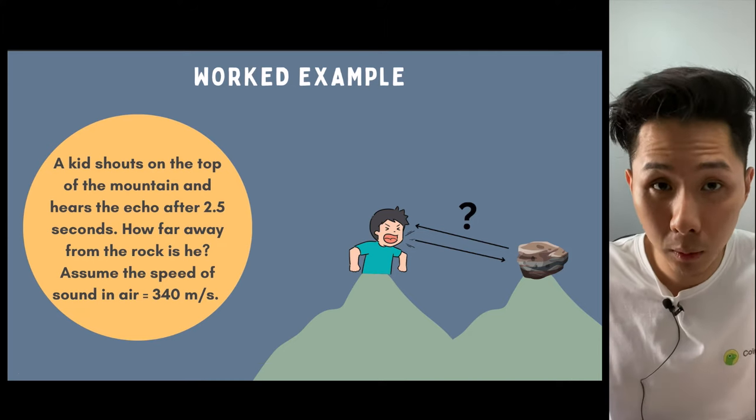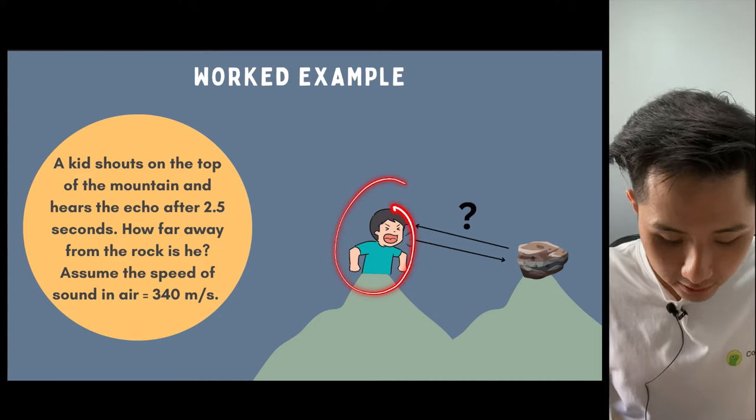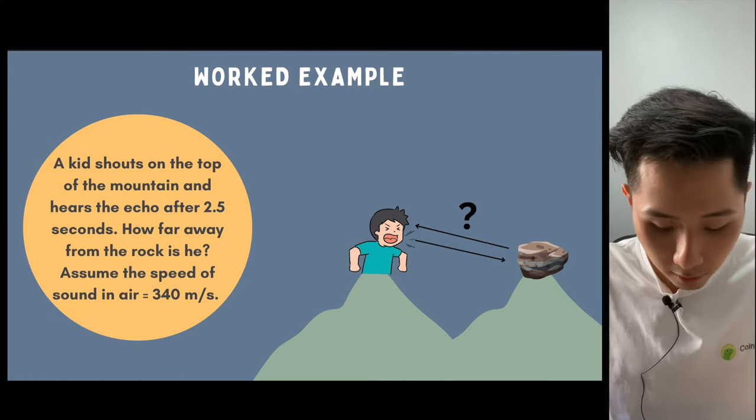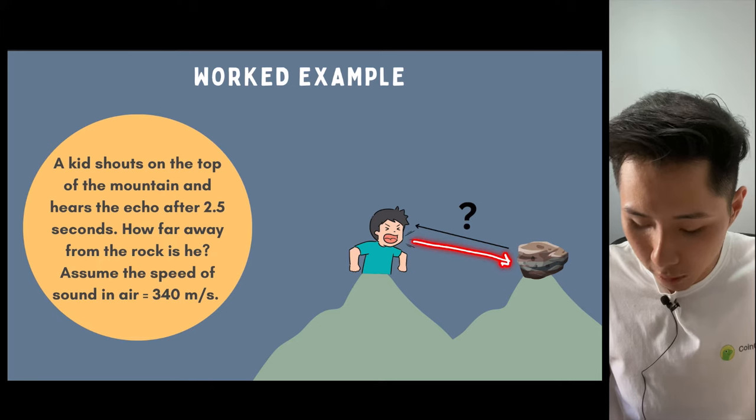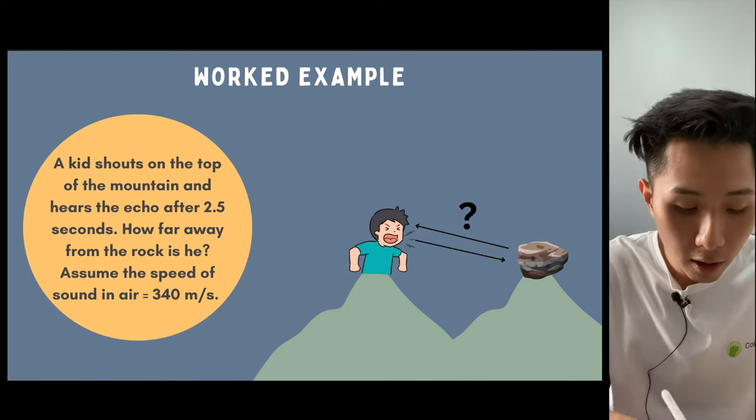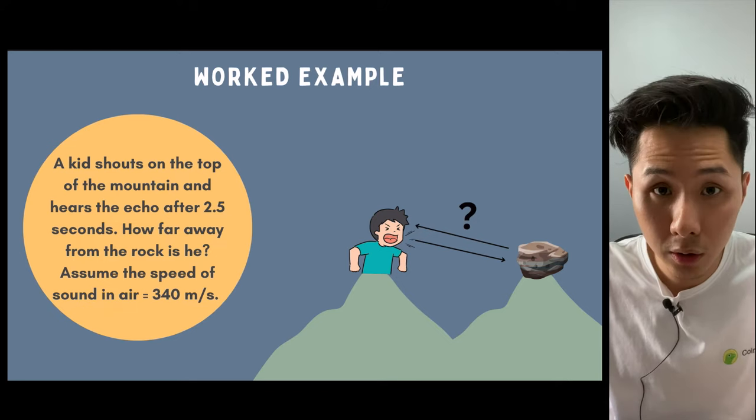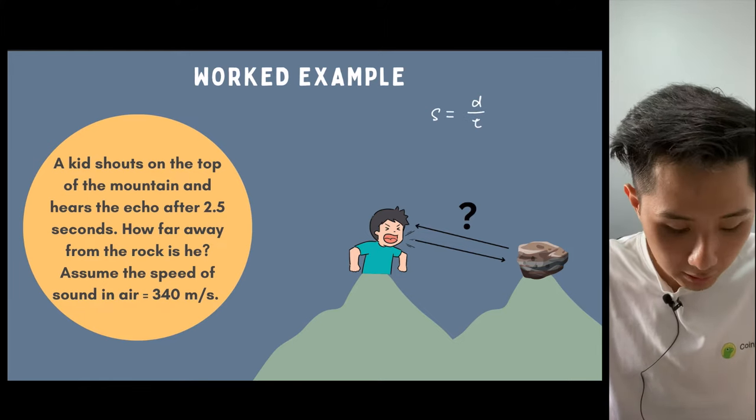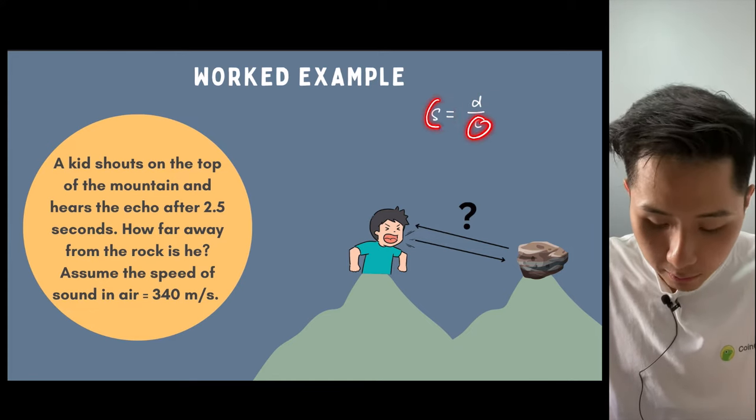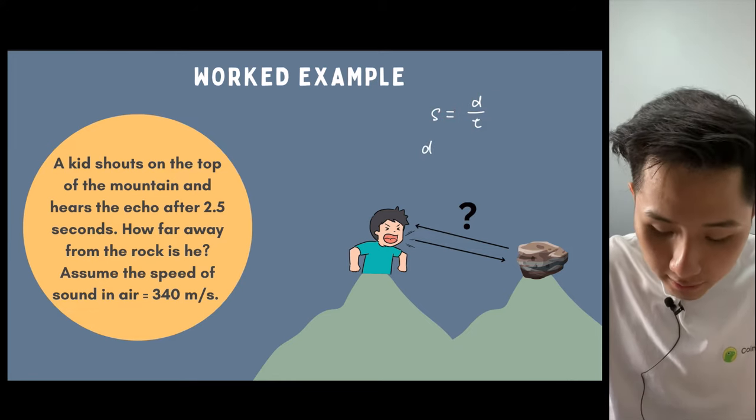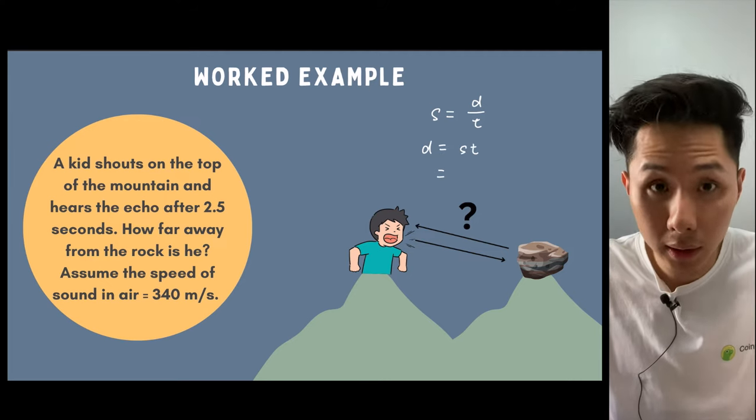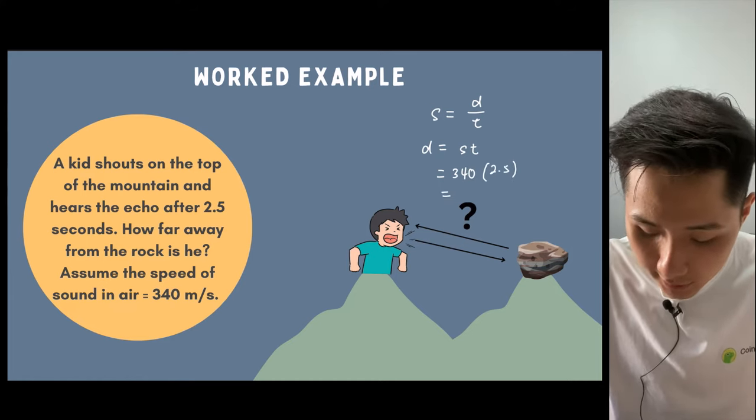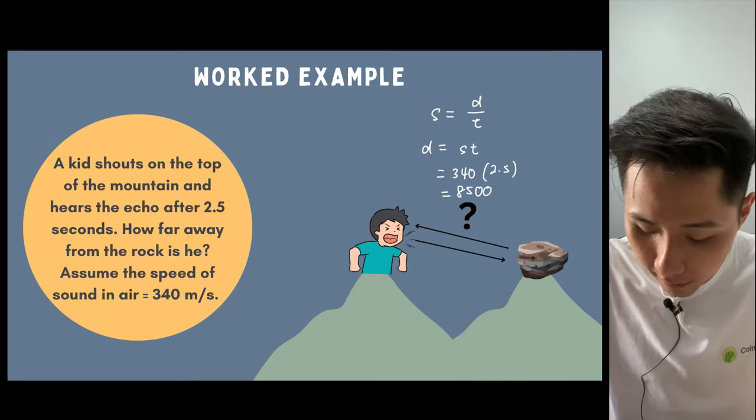Let's look into some worked examples to solve questions. Imagine a kid here shouts at the top of the mountain and hears the echo after 2.5 seconds. How far from the rock is he? Imagine that the sound travels all the way from one place to another and then reflects back. In order to solve this problem, we need to use a formula that we have learned in chapter 2, which is speed equals distance over time. Because what we need to find is the distance, we have the time, we have the speed, and we can then plug everything in and just make D the subject.